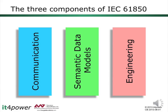IEC 61850 has three main elements: the communication capability with the abstract communication service interface and the mappings on protocols like MMS, manufacturing message specification, and TCP/IP over Ethernet; the semantic data model with the logical nodes and data objects; and the system configuration language supporting the engineering process.